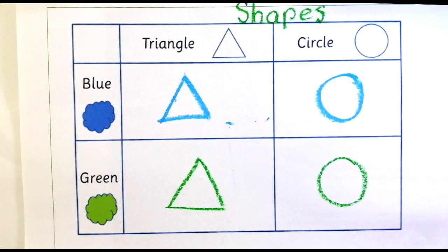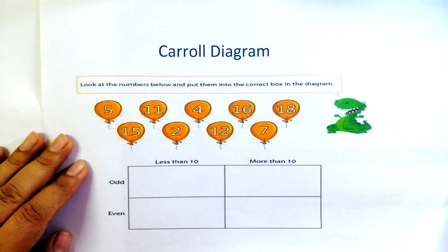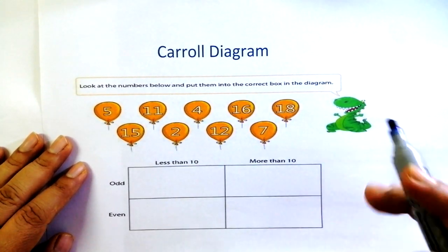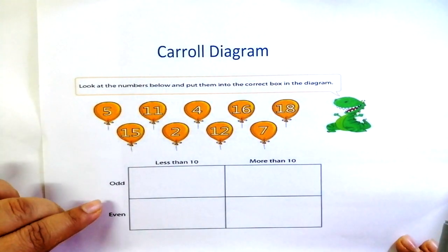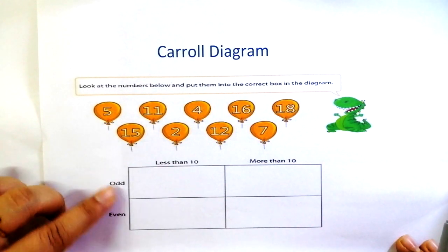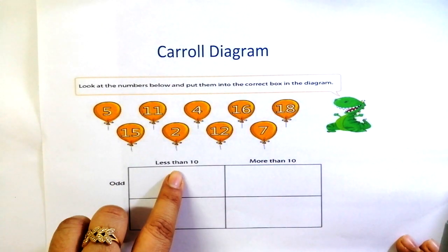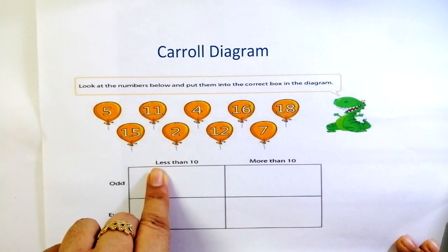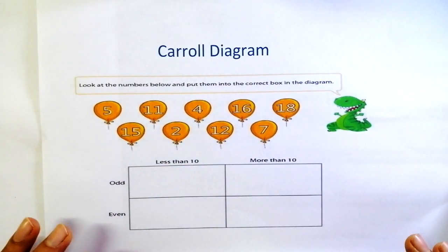This way we can complete the Carroll diagram. Let's do another worksheet on Carroll diagrams. This worksheet says we need to sort the numbers into two different groups of odd and even, and also we need to see if the number is less than 10 or more than 10, and accordingly put them in different groups.